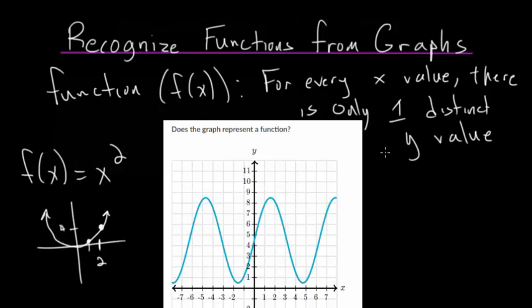An example of something that's not a function would look essentially like this. Like if we rotated the parabola 90 degrees, this is no longer a function. Because every x value, like let's say three, now has two distinct y values.